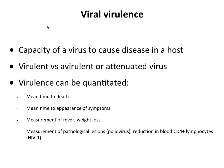We talk about an avirulent virus or an attenuated virus. We talk about attenuated vaccine strains — their virulence is greatly reduced. We can measure virulence and there are a lot of ways to do it, including mean time to death, the time it takes for a symptom to appear, measurement of fever, weight loss, and pathological lesions.